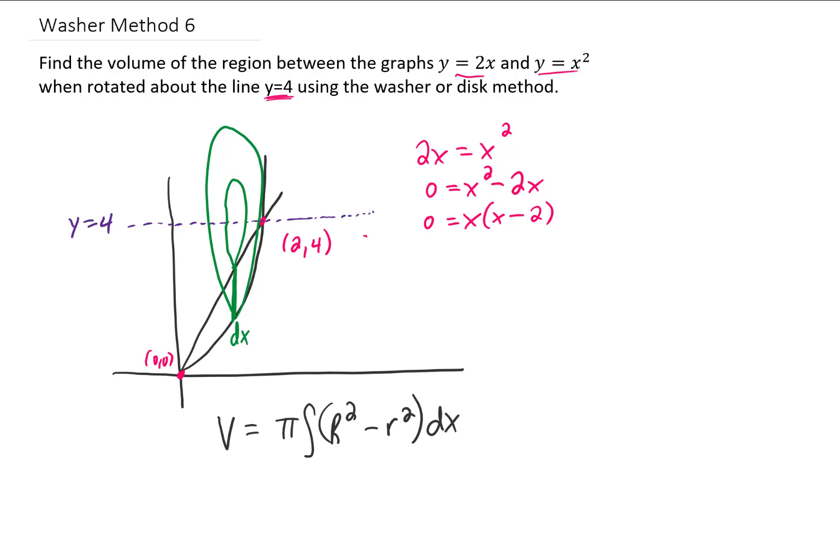So to try to clean this up a little bit, I'm just going to delete this washer and say that no matter where we slice it, we know that the outer radius of this washer is going to be given by that length right there. Now we know that this entire length right here is 4, and we also know that the length of this little piece right here is given by the equation y equals x squared.